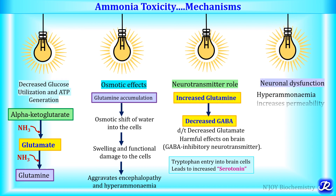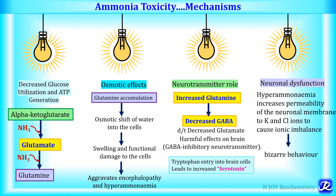The fourth mechanism is neuronal dysfunction. Hyperammonemia — increased ammonia concentration — increases the permeability of the neuronal membrane to potassium and chloride ions, resulting in ionic imbalance, which is responsible for the bizarre behavior seen in patients with ammonia toxicity.